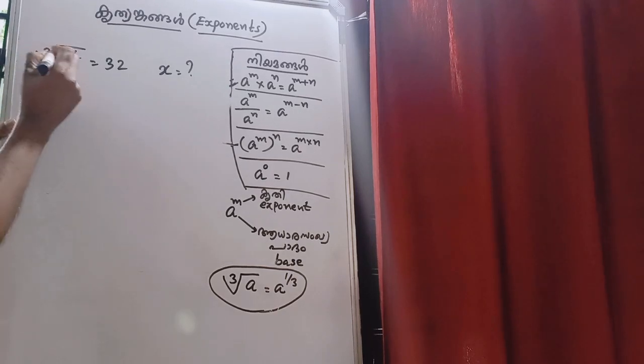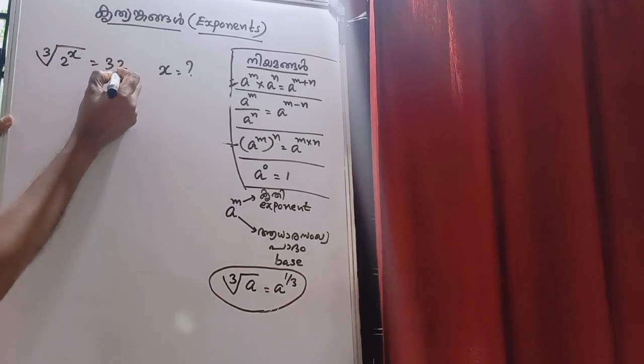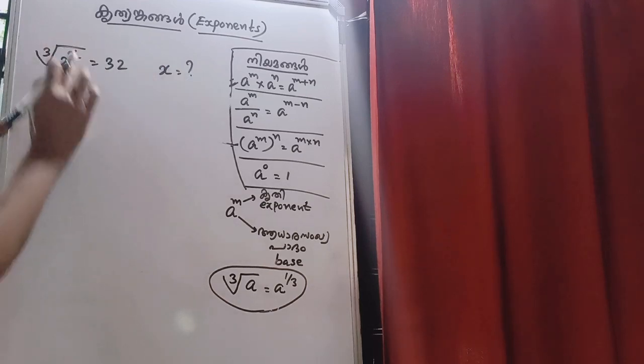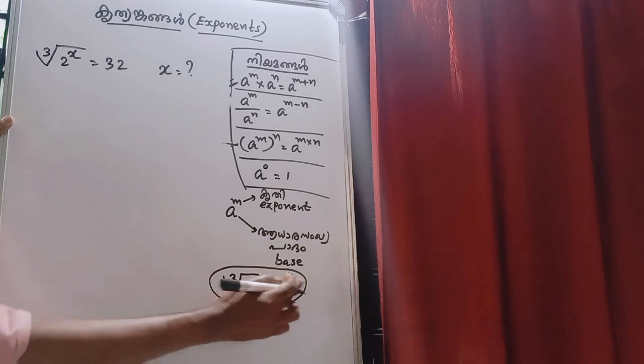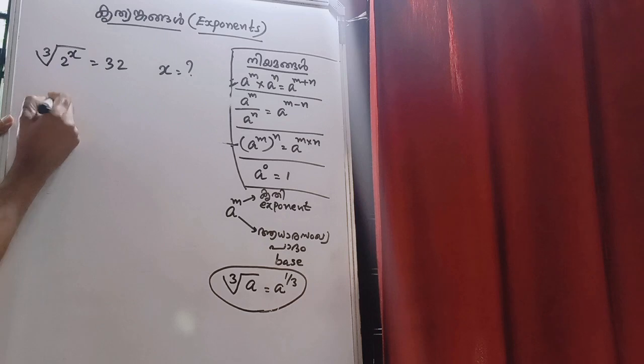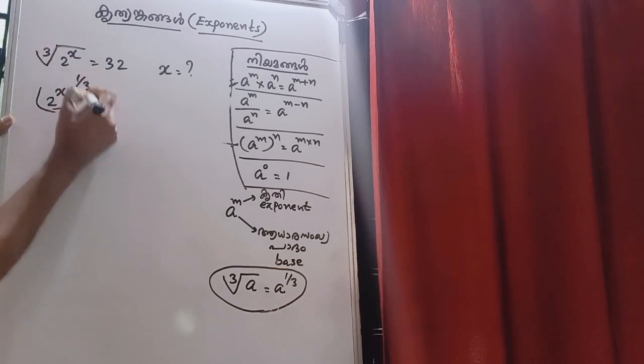Let's finish this. The cube root of 2x is equal to 32. If the cube root of 2x is equal to 3, it is equal to a radical. It is equal to 2x. It is equal to 1 by 3. So 2x to the power of 1 by 3.